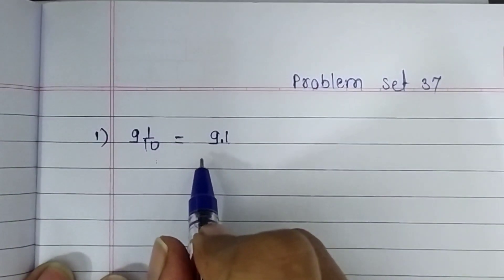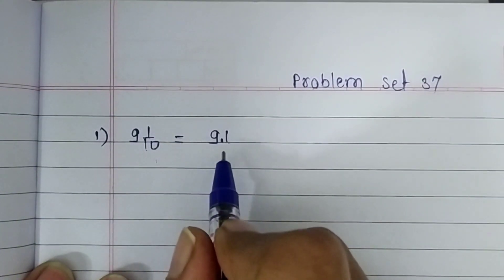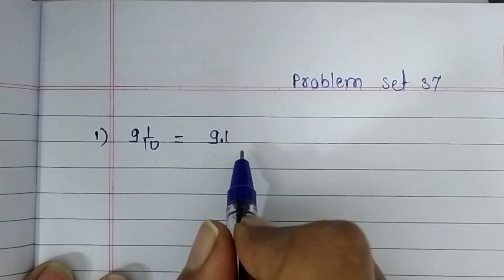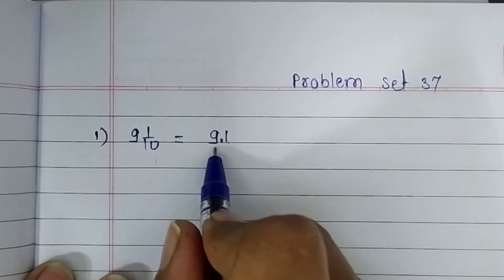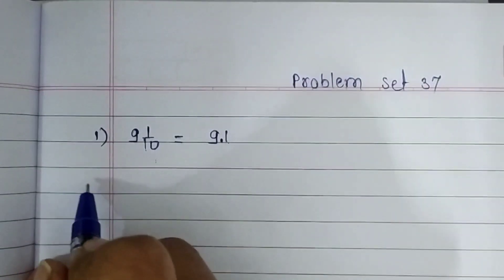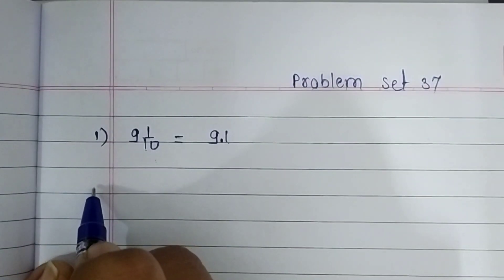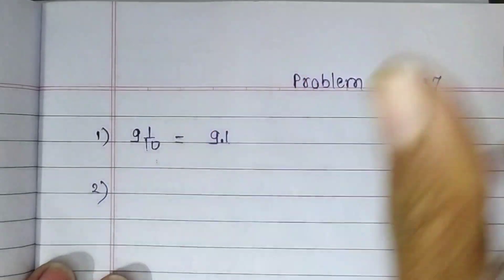Just move it and then place a decimal point here. Now the fraction is 9.1. How can we read it? 9.1. Now look at the second question.